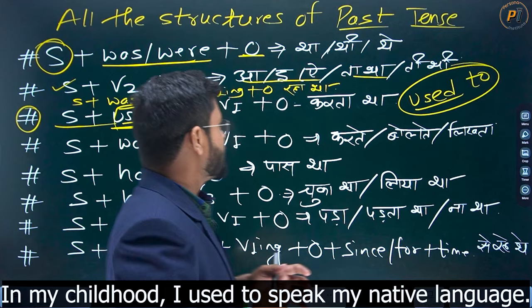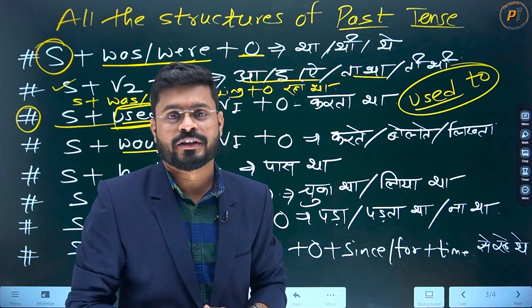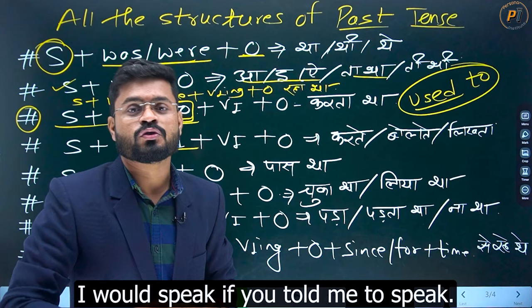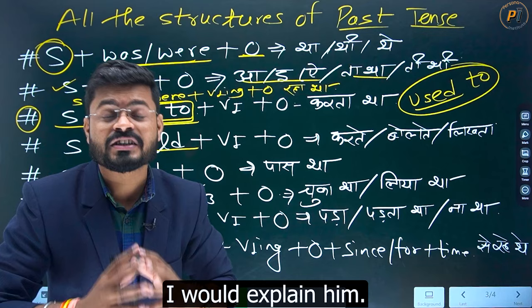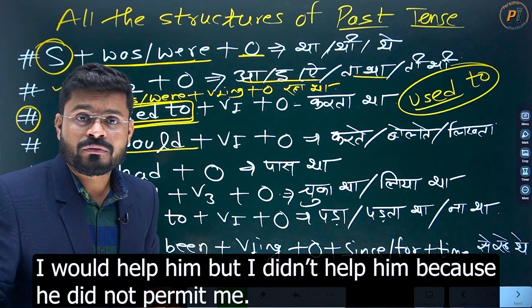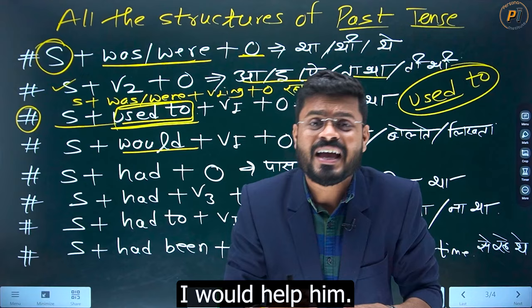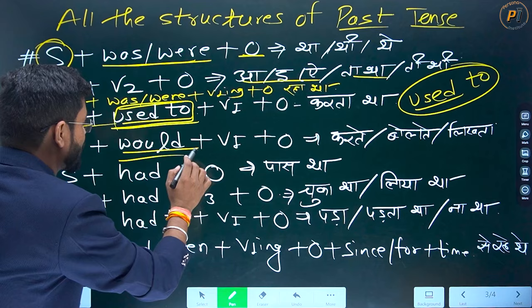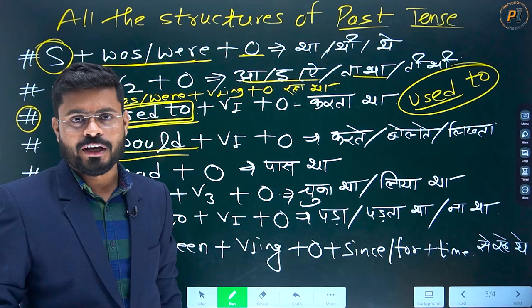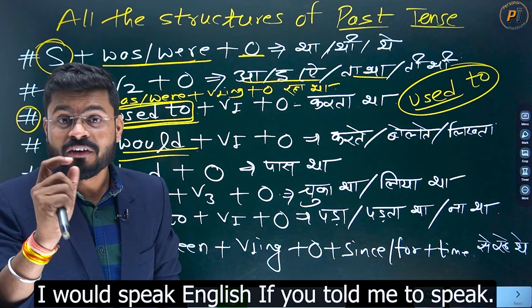Acha, 'would' bhi use hota hai past mein. Maine kaha — aap bolte mujhe bolne ke liye toh I would speak. Maine wahaan jaata — I would go there. Maine use samjhaata — I would explain him. Maine uski madad karta — I would help him. Lekin maine nahi ki, kyunki aapne mujhe permit hi nahi kiya. But I didn't help him because he did not permit me. Toh I would go there, I would teach him, I would learn something new — this is the way to use 'would'.